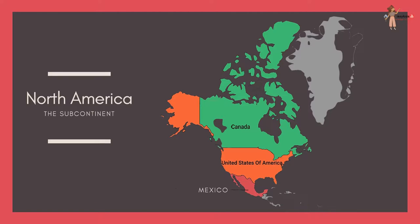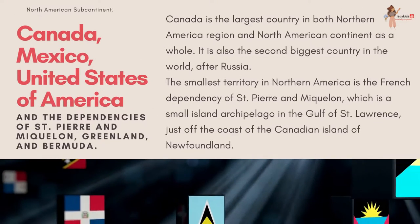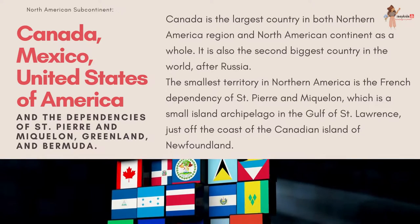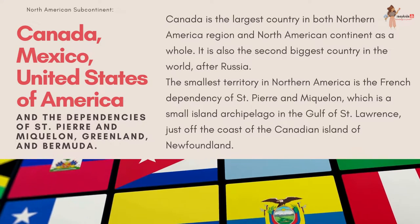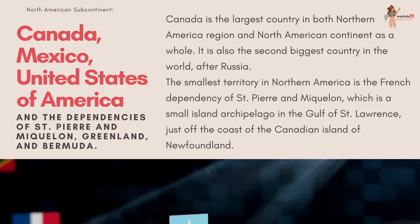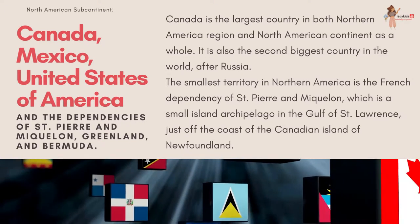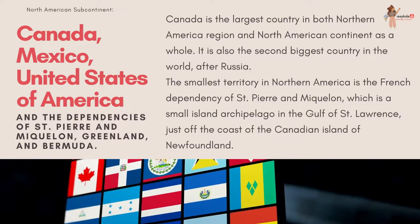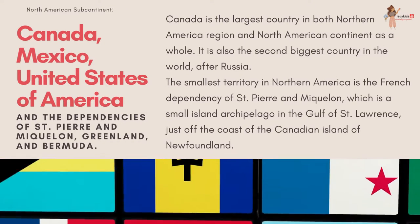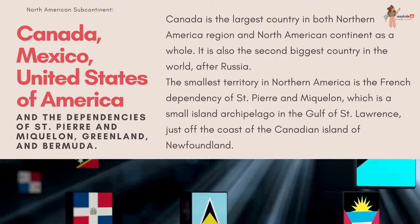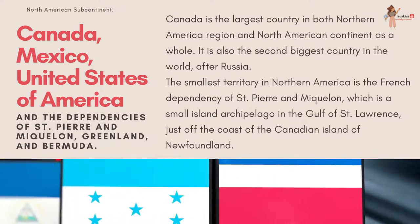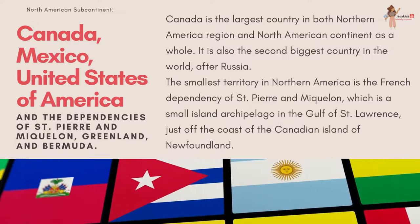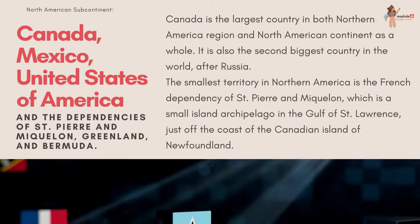North America's subcontinent of Northern America includes Canada, Mexico, the United States of America, and the dependencies of Saint Pierre and Miquelon, Greenland, and Bermuda. Canada is the largest country in both the Northern America region and the North American continent as a whole. It is also the second biggest country in the world after Russia. The smallest territory in Northern America is the French dependency of Saint Pierre and Miquelon, a small island archipelago just off the coast of the Canadian island of Newfoundland.